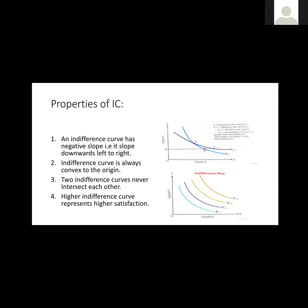But when we move to IC2, IC2 has a higher level of satisfaction. So how can it be that at point A both curves are intersecting? That would mean our satisfaction levels are equal at that point, which is not possible. Therefore, two indifference curves never intersect with each other.